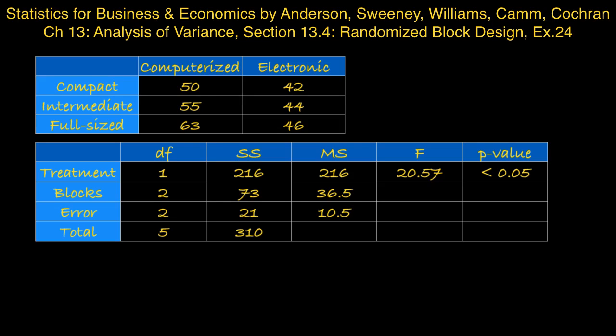The treatment degrees of freedom, well the treatment in this case is the type of analyzer used, and there's two of those, and 2 minus 1 equals 1. So there's one treatment degree of freedom. The degrees of freedom for blocks, remember the blocks in this problem are the types of car, and there's three different types of car. 3 minus 1 equals 2, so there's two degrees of freedom for blocks.